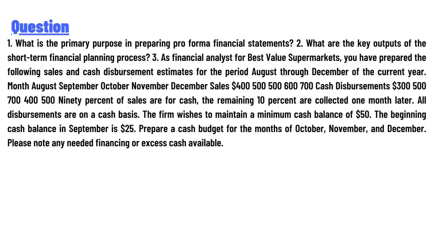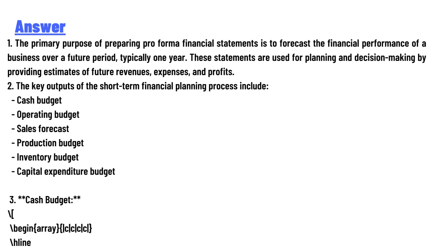Disbursements are on a cash basis. The firm wishes to maintain a minimum cash balance of $50. The beginning cash balance for September is $25. Prepare a cash budget for the months of October, November, and December, noting any needed financing or excess cash available.